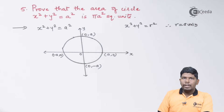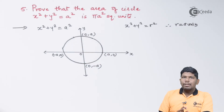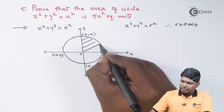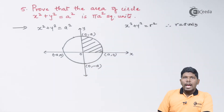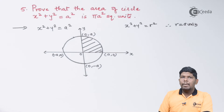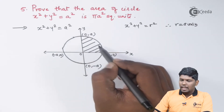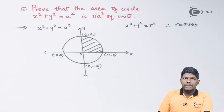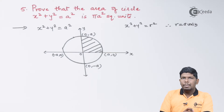We know that area of circle is πr², but we need to prove it using definite integrals. There are four quarter circles, so we will consider the one in the first quadrant. The area of all four quarter circles is the same, so we find the area of this quarter circle and multiply by 4. We can use either ∫y dx or ∫x dy; we will use ∫y dx, and for that we need to find the limits of x.